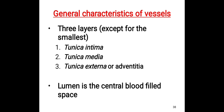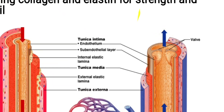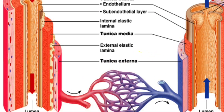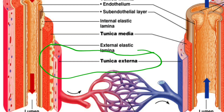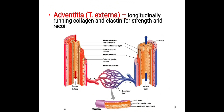The lumen is the central blood-filled space — the central portion which is blood-filled is called the lumen. Tunica externa is the outer layer of the blood vessel; it contains collagen and elastin fibers that provide strength and recoil.